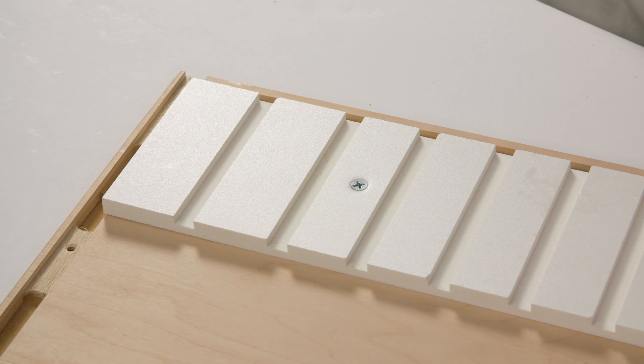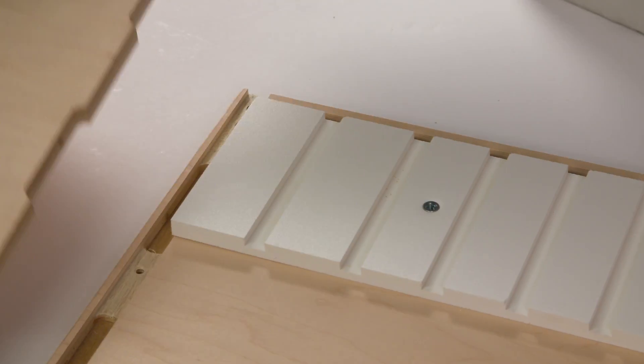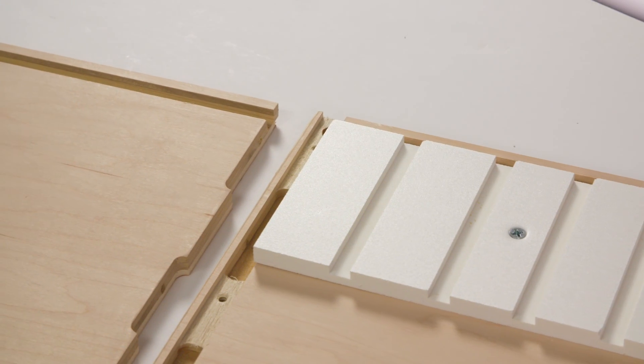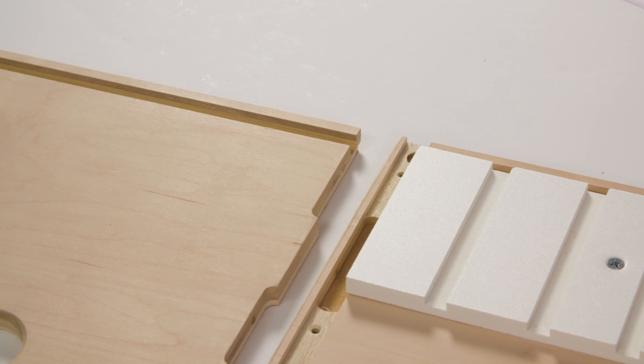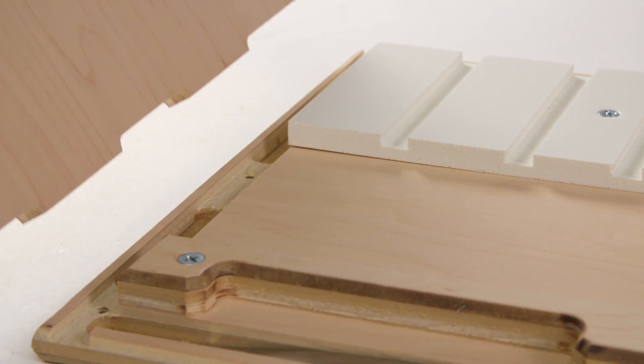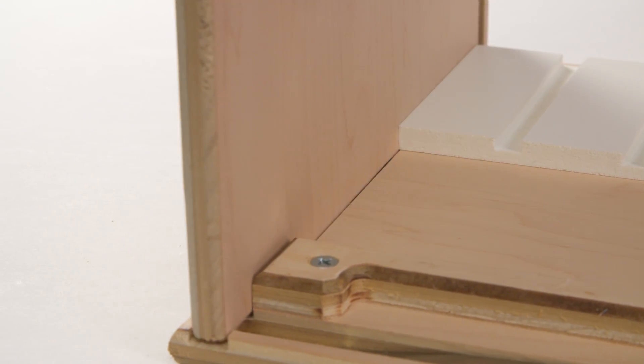Begin by laying out one long side and one short handle side on a flat level surface. Make sure that both sides have the bottom groove facing up. Insert the handle side tenons into the deep mortise of the long side.